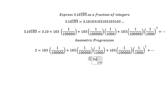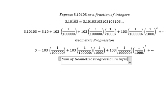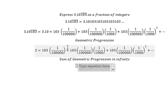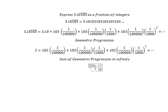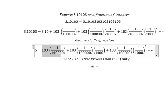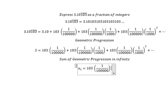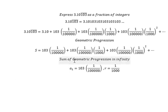We need to find the sum of the geometric progression to infinity. First, we need to find the first term of the series, so we have a₁ equals to this one. And r, the common ratio, is 1 over 1000. The formula is a₁ over 1 minus r.